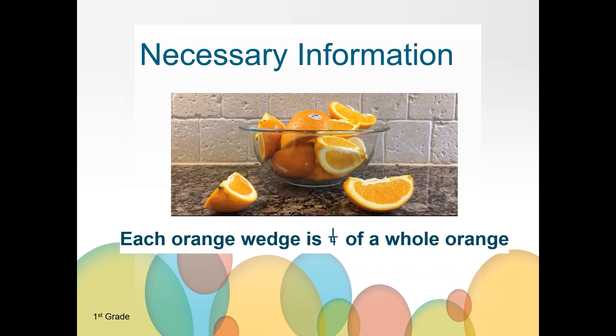One thing we need to know is the size of each orange wedge. Each orange wedge is one fourth of a whole orange. If an orange is cut into fourths, how many pieces will you have in a whole orange? Each orange will have four fourths, or be cut into four equal pieces.